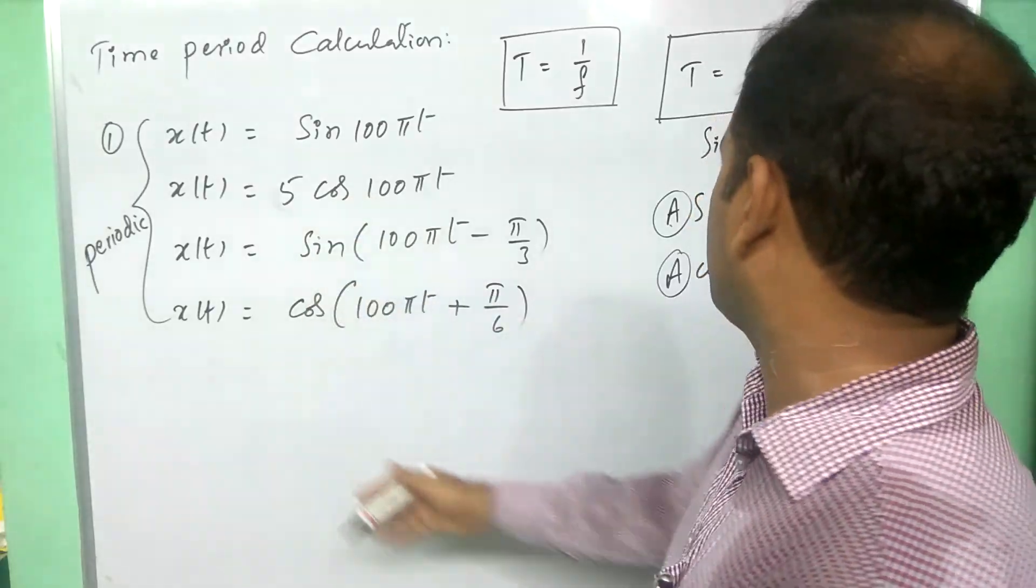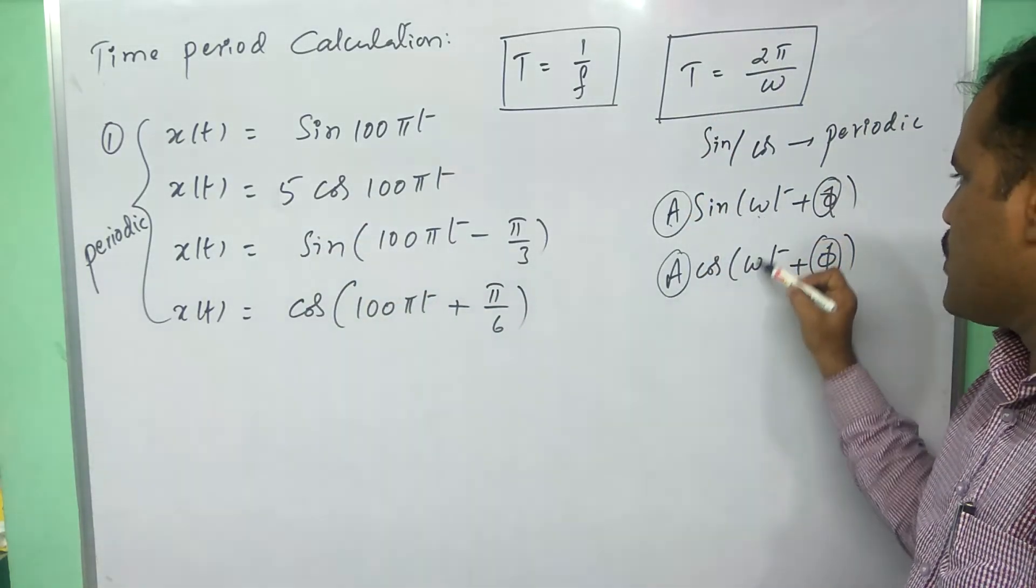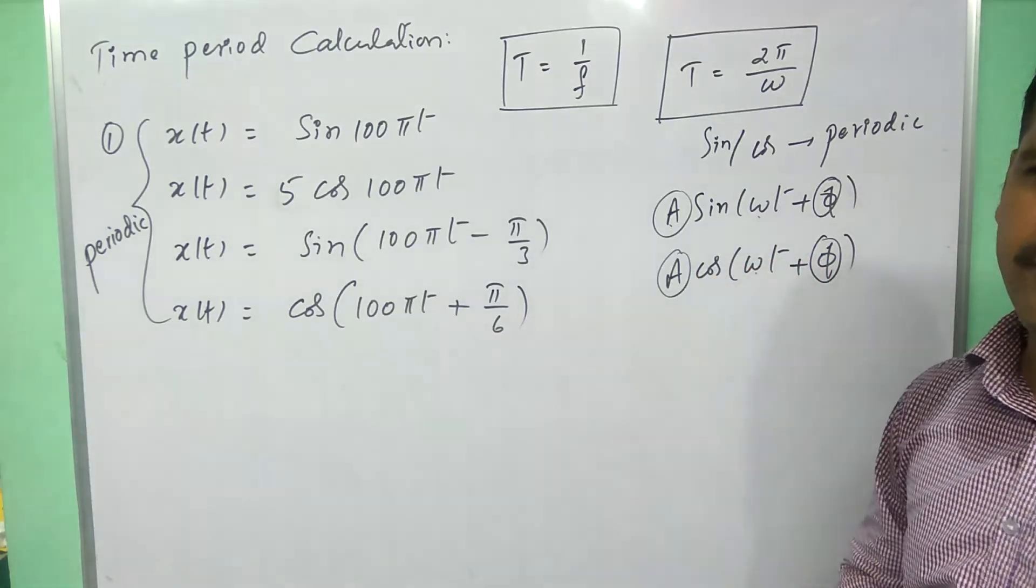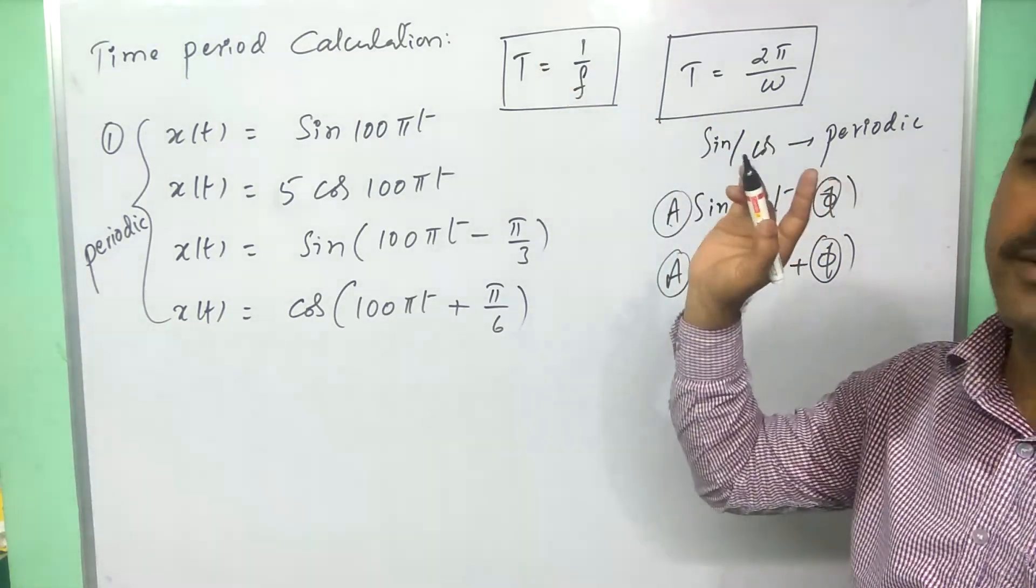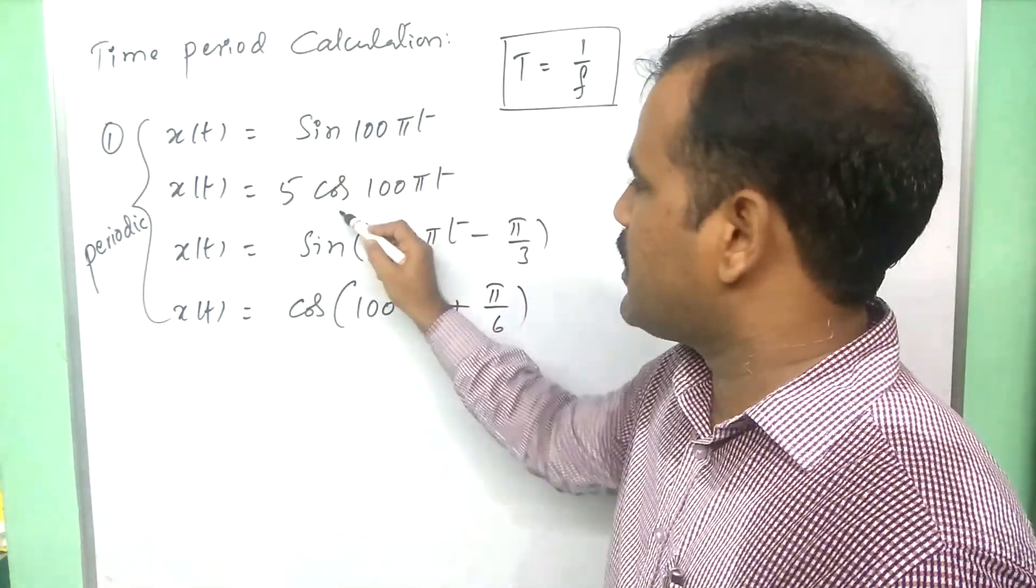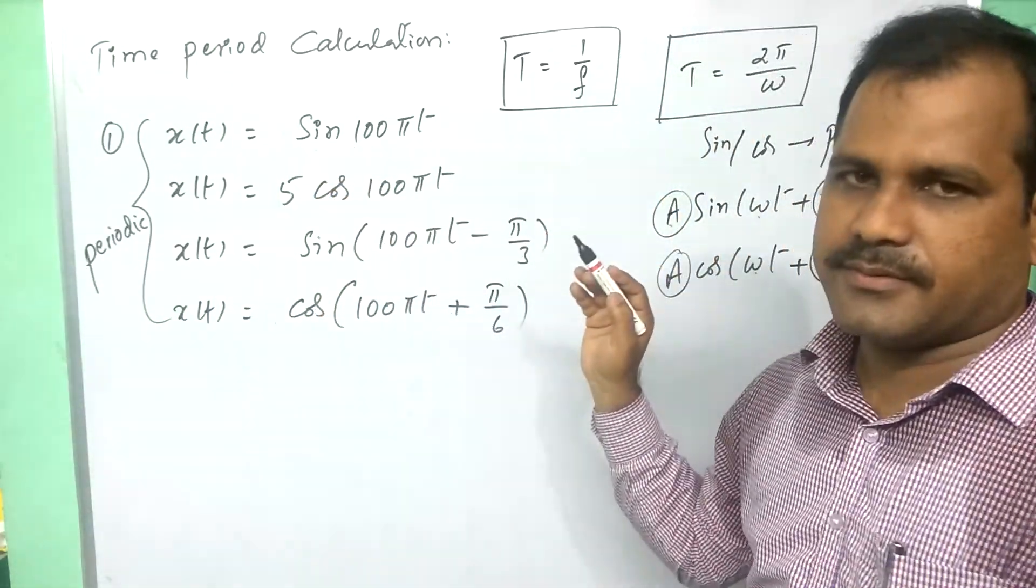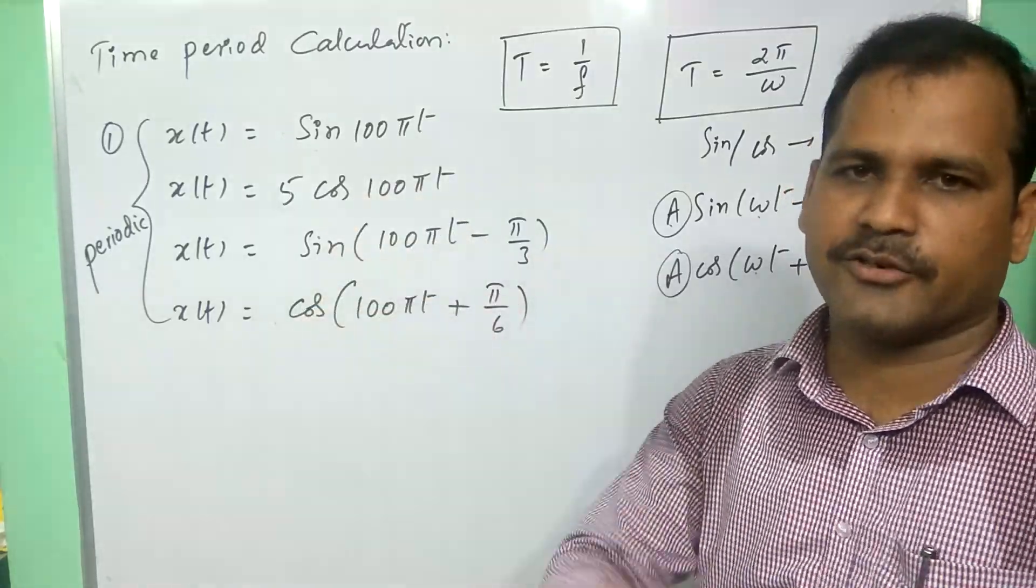So, observe this signal and especially omega. Whenever it is same, whether sine or cos also doesn't matter for us, to calculate time period only. So, sine or cos or whatever the amplitude, whatever the phase shift, all these factors we can neglect.